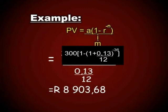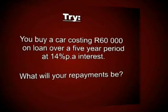Now I want you to have a try at this. You buy a car costing 60,000 Rand on loan over a 5-year period at an interest rate of 14% per annum. What will your repayments be? Press pause and have a go. Remember, you are working out the A value — your repayment value — and you have a present value of 60,000 Rand.